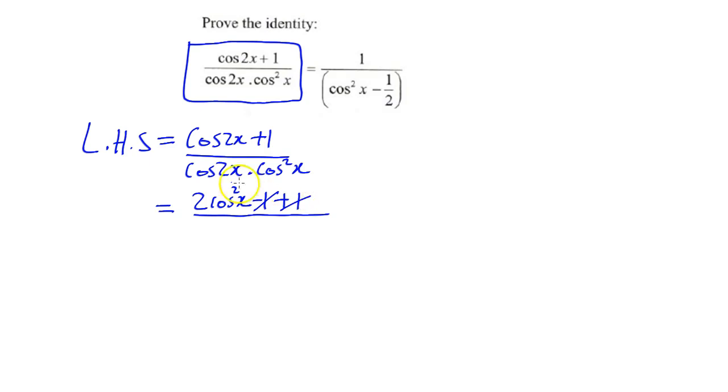In the bottom I have cos 2x times cos squared x. If I look at that carefully, I will leave cos 2x like that for now because this cos squared x will be able to cancel off.